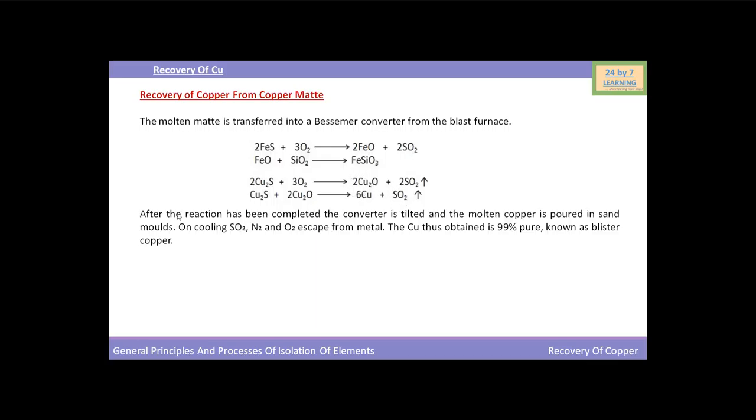After the reaction has been completed, the converter is tilted and the molten copper is poured into sand moulds. On cooling, sulphur dioxide, nitrogen and oxygen escape from the metal. The copper thus obtained is 99% pure and is known as blister copper.